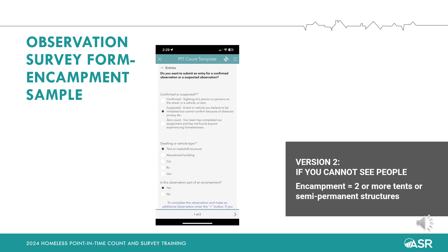In the second example, you observed three tents together but you don't see any individuals. In this case, you start by bubbling in 'suspected' under confirmed or suspected. Under dwelling or vehicle type, you would bubble in 'tent or makeshift structure.' Under 'is this sighting part of an encampment,' you would bubble in yes. Then press the plus button near the bottom right corner to indicate another entry and repeat these steps for the next two tents.